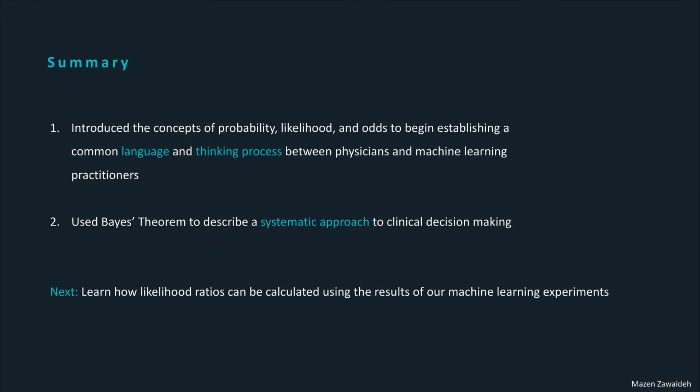To summarize, we've introduced the concepts of probability, likelihood, and odds to begin establishing a common language and thinking process between physicians and machine learning practitioners. We've used Bayes' theorem to describe a systematic approach to clinical decision-making. In the next lecture, we'll learn how likelihood ratios can be calculated using the results of our machine learning experiments.